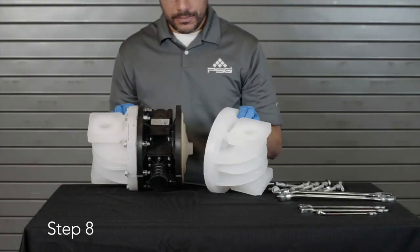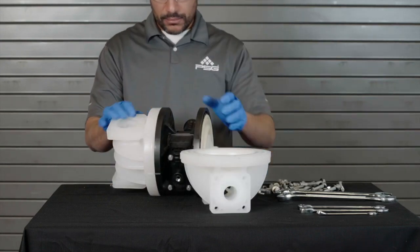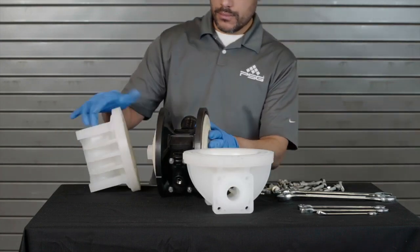Step 8: Once the screws, washers, and nuts are removed, remove both outer chambers from the intermediate.